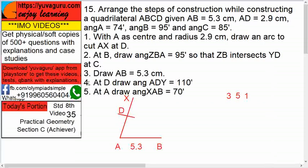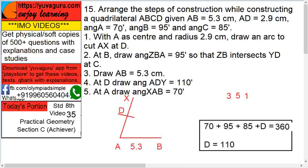So step 4: at D draw angle ADY equals 110 degrees. But where is 110? Is it given somewhere else? Where did you get this 110? See, it's like this - sum of all angles of a quadrilateral is 360. So add all of them: 70 plus 95 plus 85 plus D equals 360, so D equals 110.